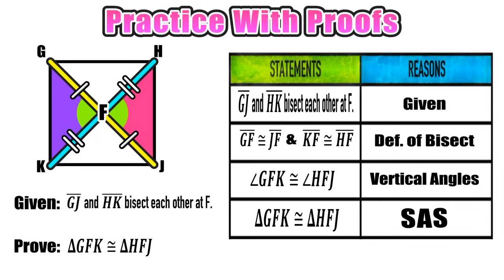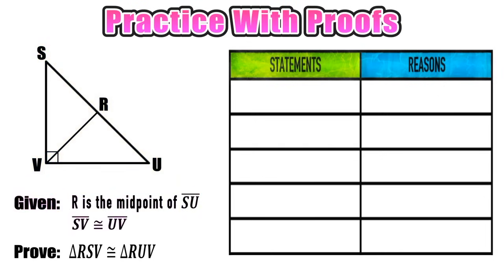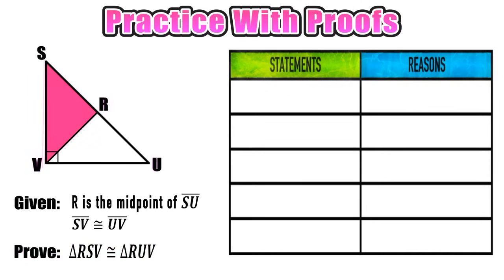Let's move on to a more challenging one — geometry proofs level two. Same structure: we have a diagram and two pieces of given information, and again we have to prove that two triangles are congruent. We want to prove that triangle RSV is congruent to triangle RUV. Those two triangles combined make up a larger right triangle. Let's start with the givens — the first is that R is the midpoint of segment SU.